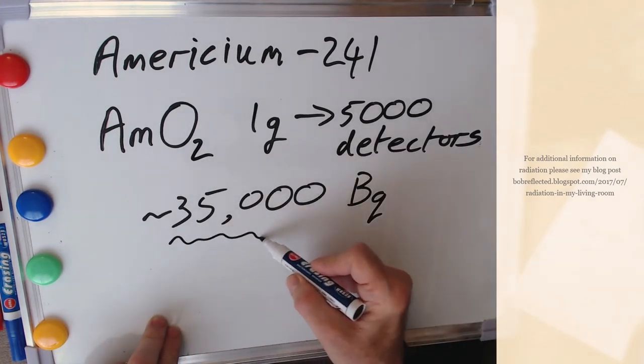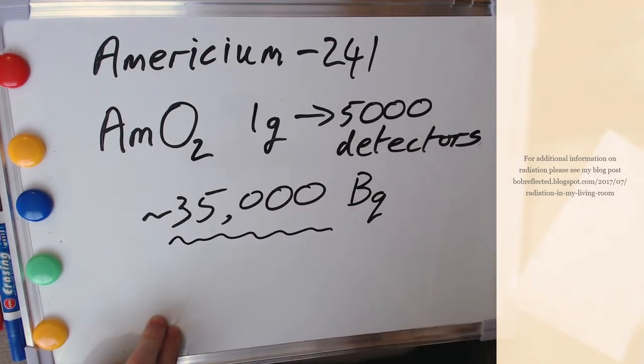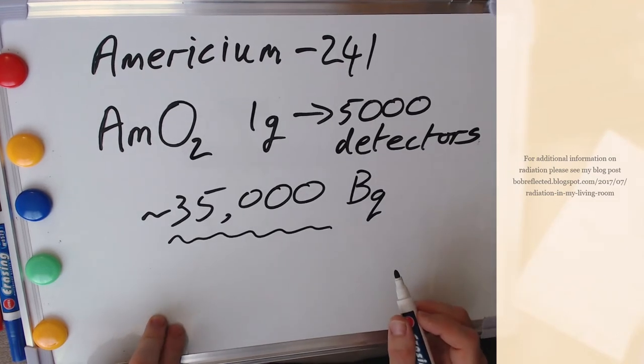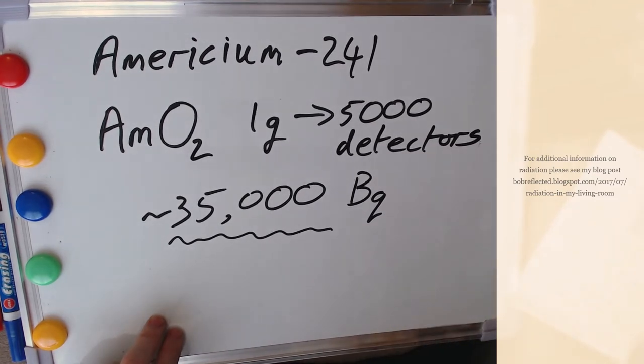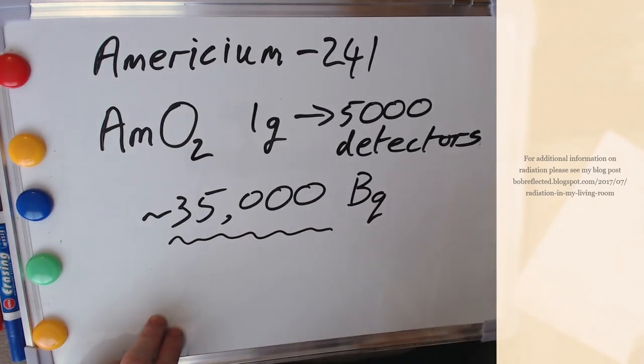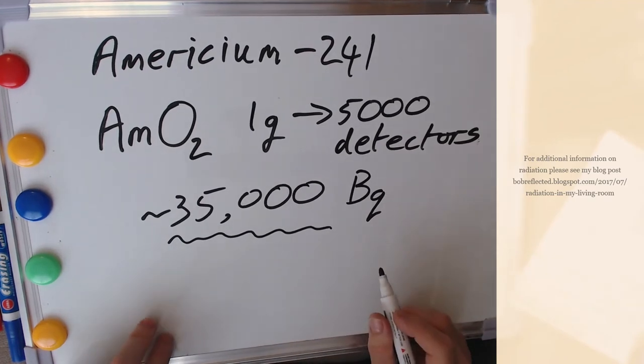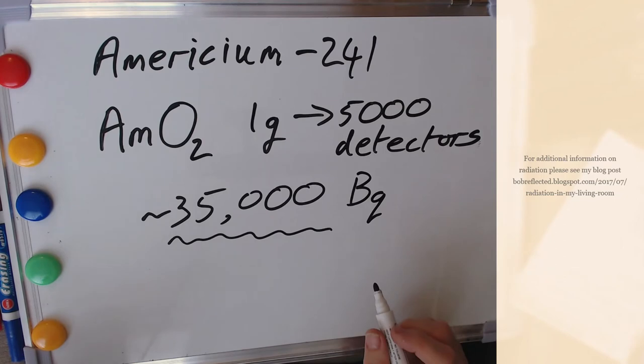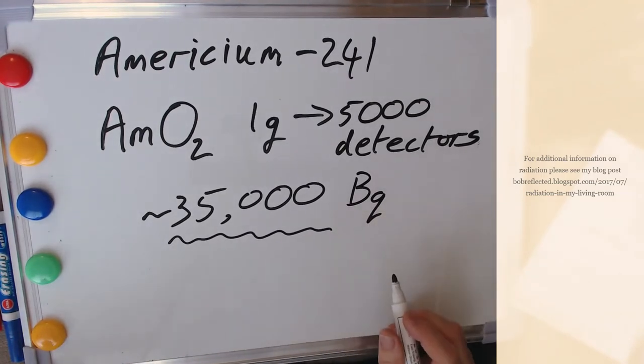So we have 35,000 radioactive events per second going on in this tiny amount of americium in our smoke detector. And this level is high enough to ionize enough of the air in the ionization chamber to complete that circuit and to make sure that the alarm is off until of course smoke gets in and disrupts the process. So this actually sounds quite a lot. It's worth I think dwelling on this radioactive decay process in a little bit more detail.